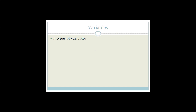Your variables — there are three types: dependent, independent, and fixed. The dependent variable is what is measured. So if you're measuring how tall the trees are, that's what's measured. It's always represented on the y-axis. Remember the straight line equation y = mx + c — y depends on x, so the dependent variable is on the y-axis.